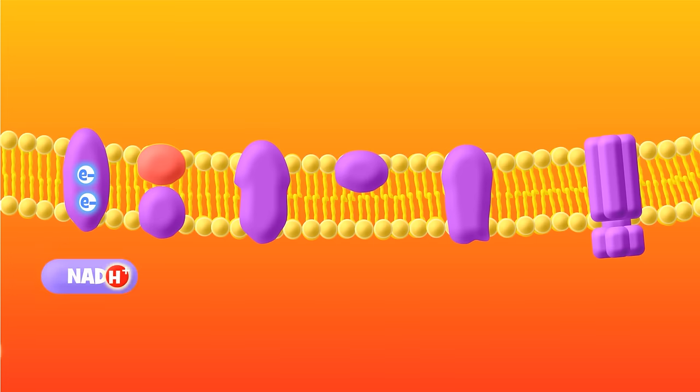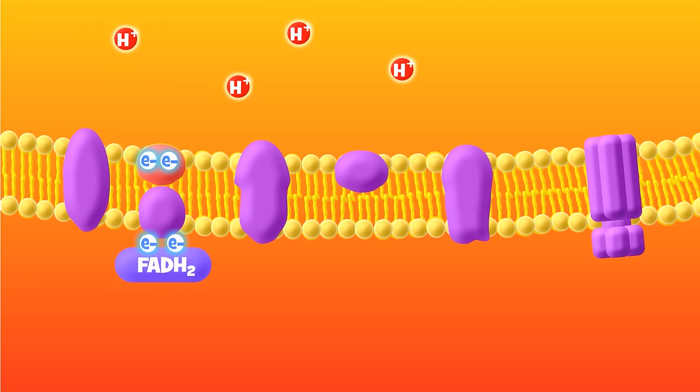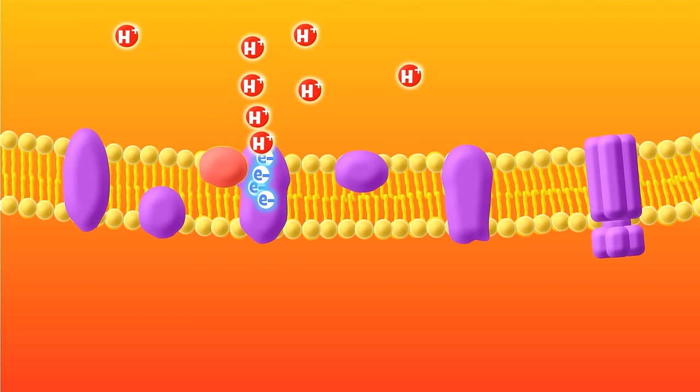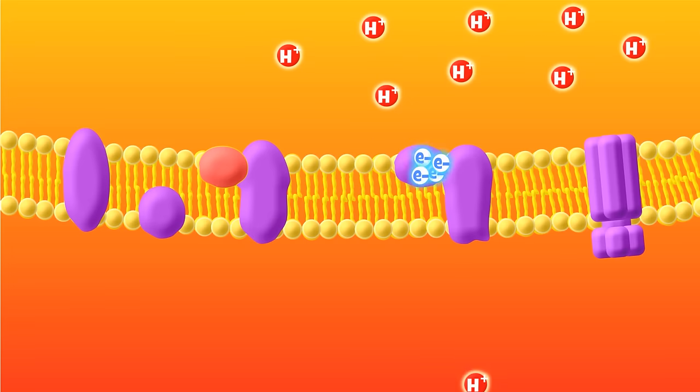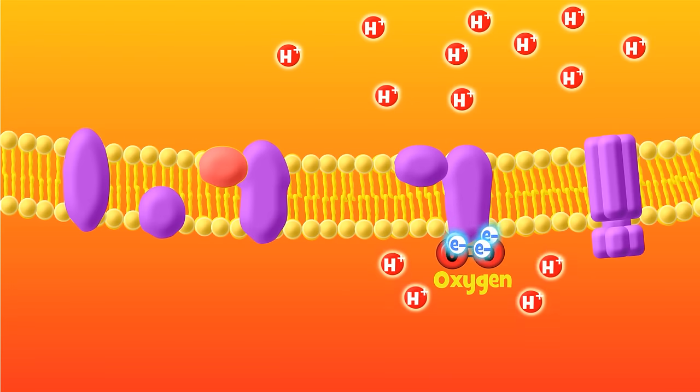All of the steps of aerobic respiration that we have done so far have been leading up to this, the electron transport chain. This is the main event, the big bonanza, the Super Bowl of cellular respiration.